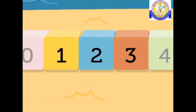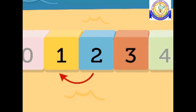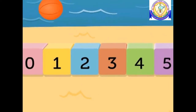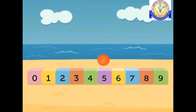Now look at the number two: what comes before two? One. What comes after two? Three. So we can say that one comes before two and three comes after two. Wasn't it fun to learn before and after with blocks and a ball?